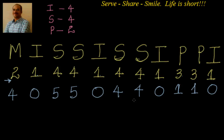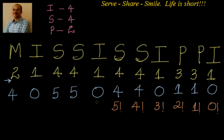After that, the next step is to write the factorials from right to left. So this is 0 factorial, then 1 factorial, then 2 factorial, then 3 factorial, then 4 factorial, then 5 factorial, then 6 factorial, 7 factorial, 8 factorial, 9 factorial, and 10 factorial.